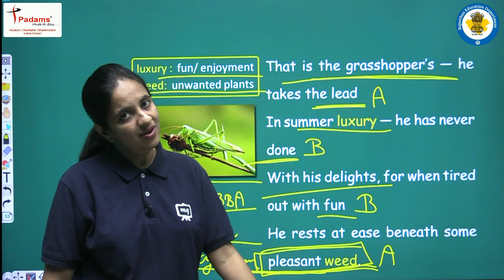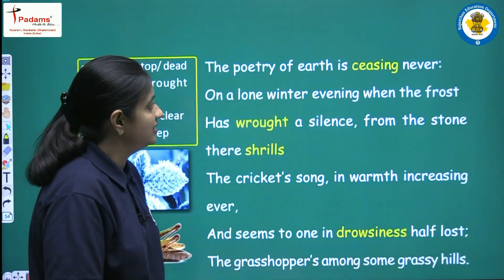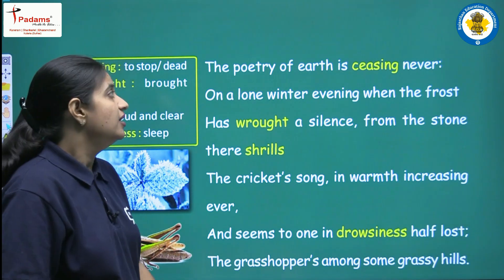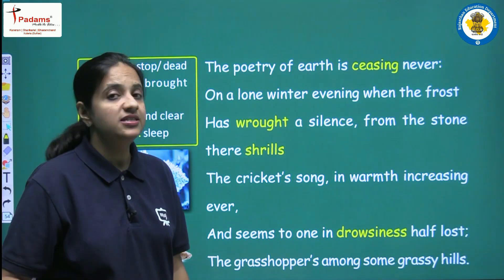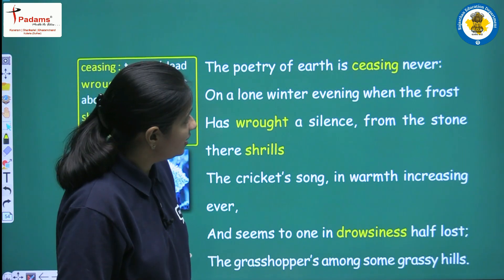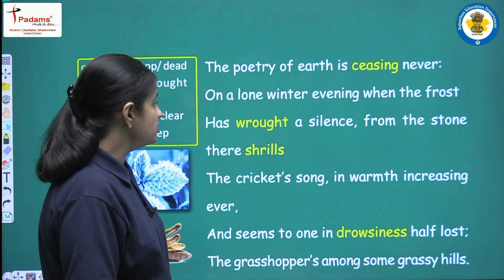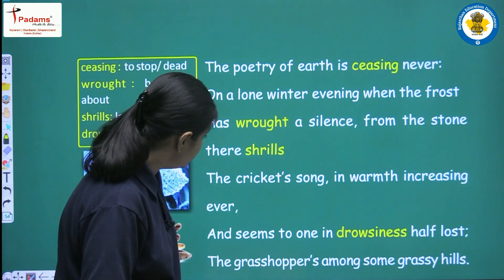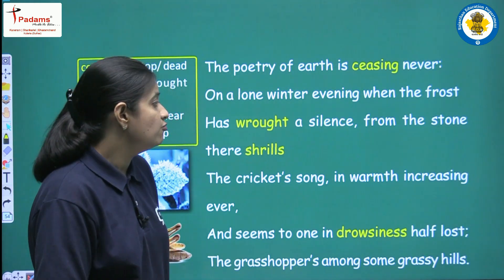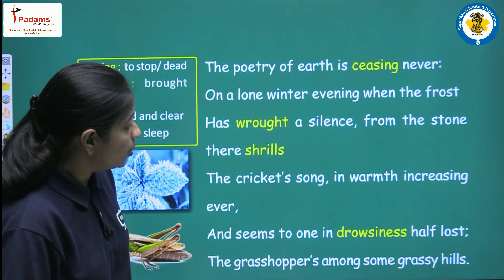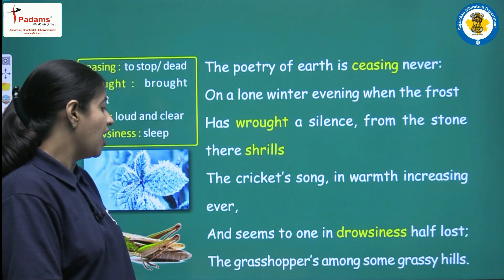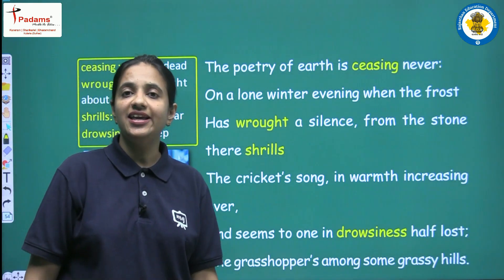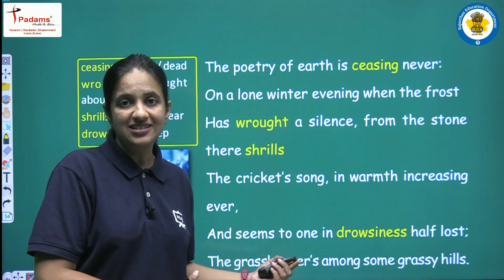Now let's continue with the second stanza. The lines read: 'The poetry of earth is ceasing never. On a lone winter evening, when the frost has wrought a silence from the stone there shrills the cricket's song, in warmth increasing ever, and seems to one in drowsiness half lost, the grasshopper's among some grassy hills.'